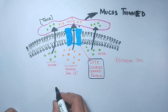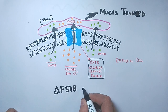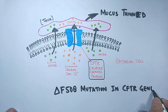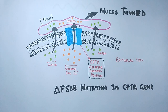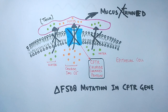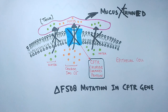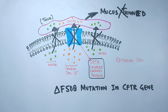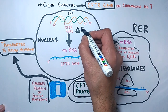Things change when there is a ΔF508 mutation in the CFTR gene. At that time the CFTR protein is absent from the plasma membrane. The ΔF508 mutation is the deletion of the phenylalanine amino acid at position 508 on the polypeptide chain — 'F' being the symbol for phenylalanine.